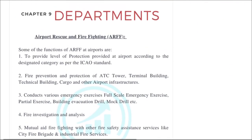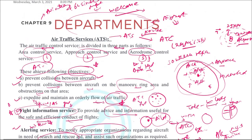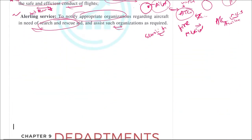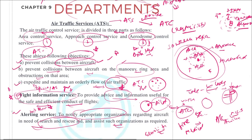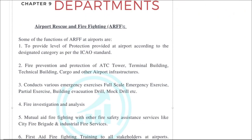So you can remember that ATC provides the flight information service and alerting service. In general, the ATC has to ensure no collision between aircraft happens in the air or in the maneuvering area, and they have to maintain orderly traffic. That is the general description of what ATC does.